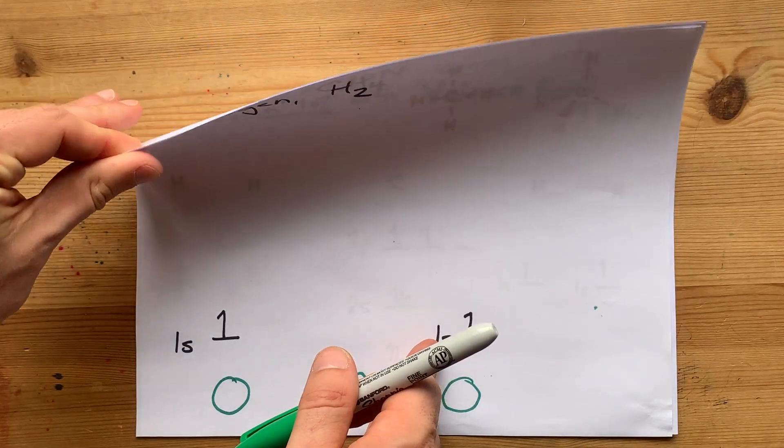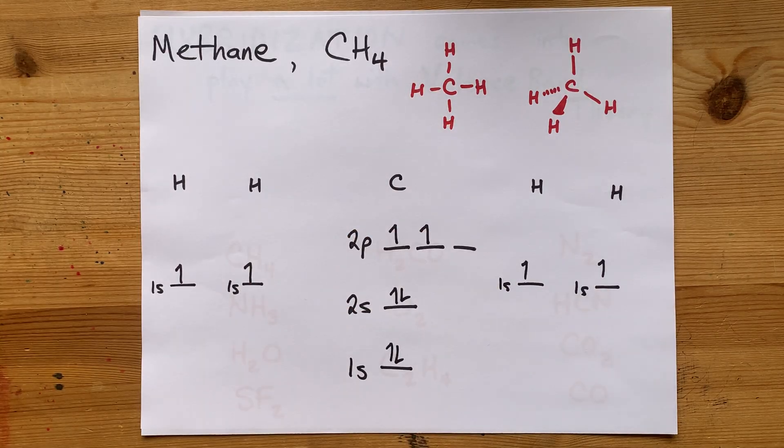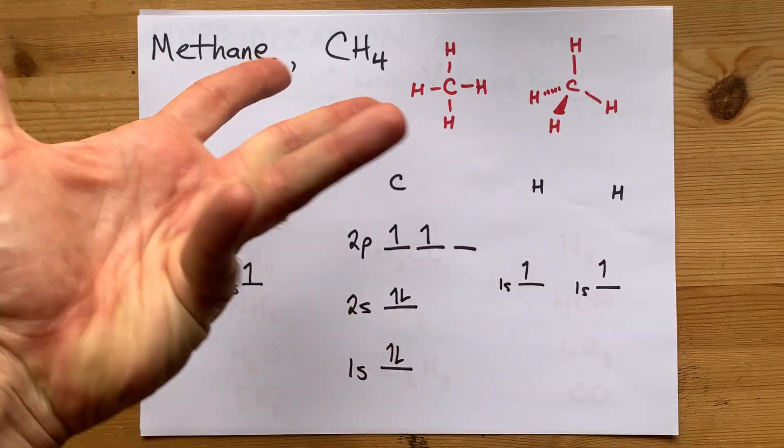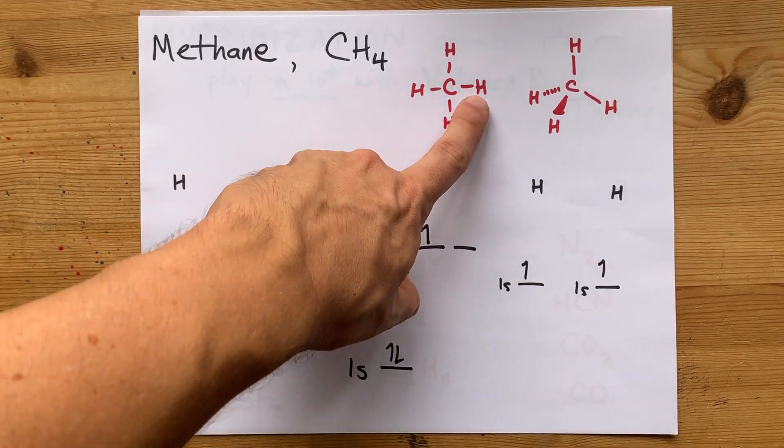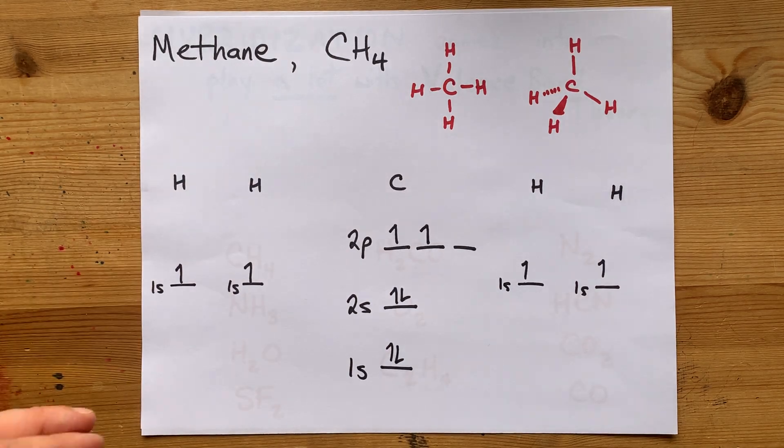But what if you tried to do that with a more complicated molecule like methane? Methane is a carbon connected to four hydrogens. And all the data we have says that all four of those bonds are equivalent. They're all exactly the same.